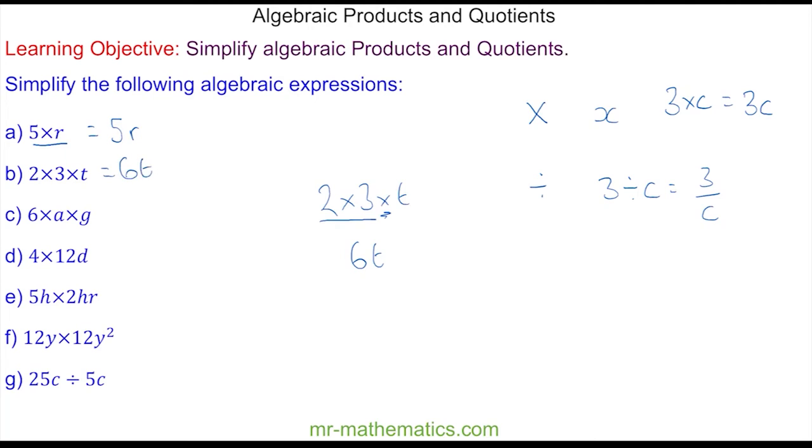For question c, where we have 6 multiplied by a multiplied by g, we take out the multiplication symbol and we write 6ag.